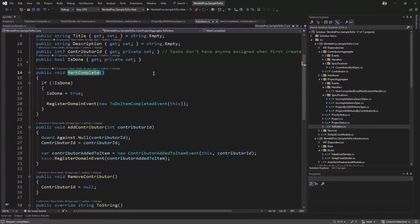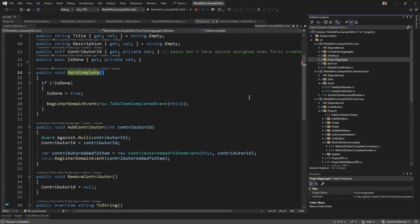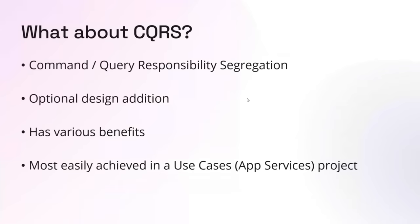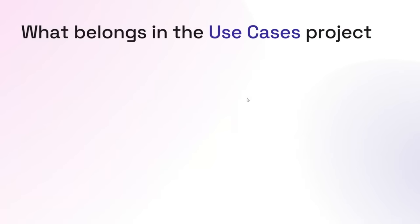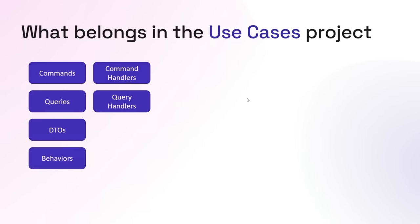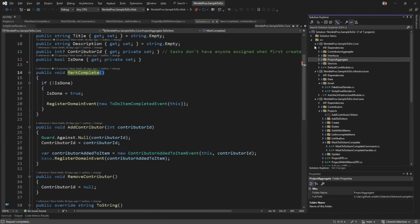That's the core project. Now let's jump to the next thing: command query responsibility segregation, or CQRS, which is an optional design you can include in your architecture. It has various benefits and you can achieve this most easily in a separate project that sits between the user interface and your domain model — sometimes called use cases or app services. The things that belong in there are commands and handlers, queries and query handlers, various DTOs that support these commands and queries, and behaviors.